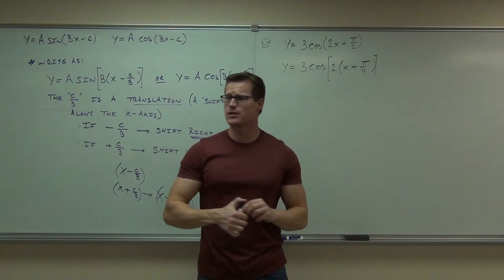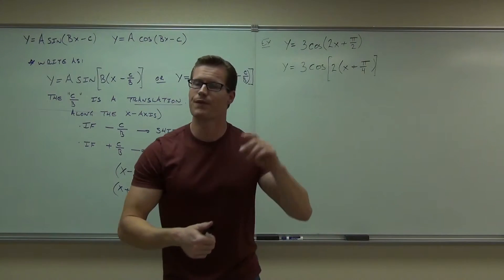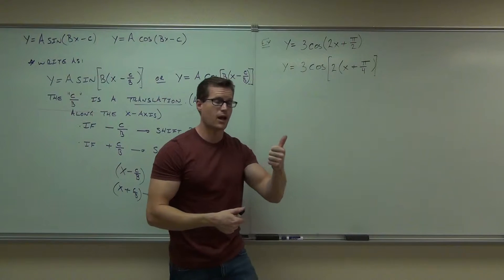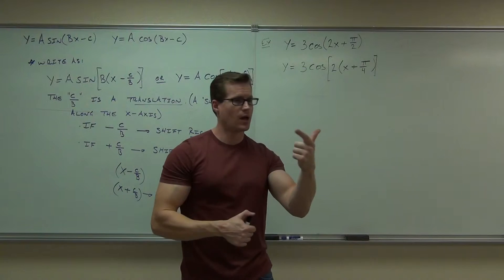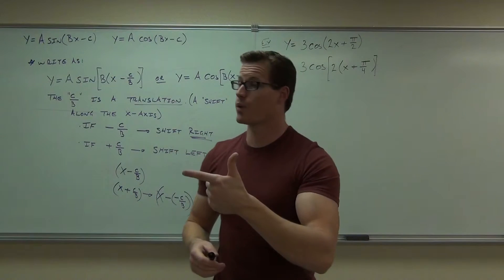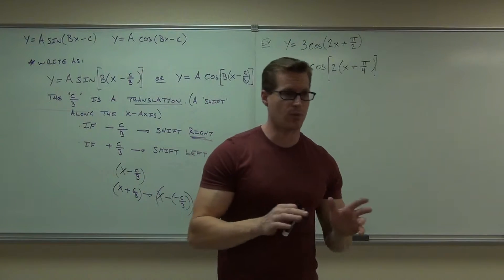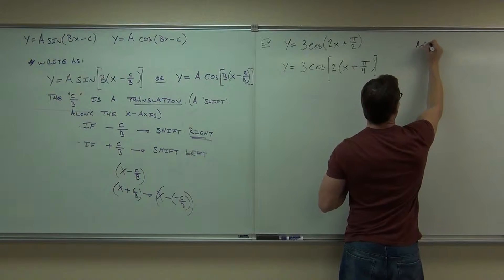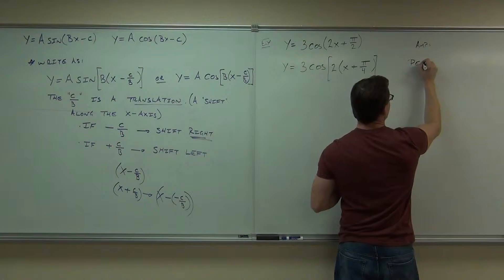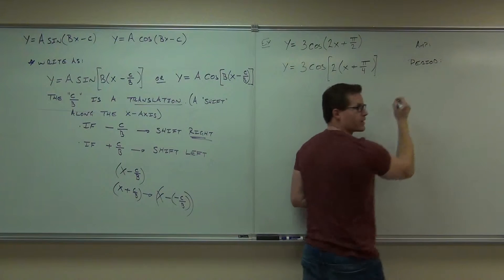Now, let's write out everything that's meaningful about this statement right now. I want the amplitude, so go ahead and do that. I want the period, so go ahead and do that. That's given by your B, remember. And I want you to determine what type of shift this is and by how much. So write out the amplitude, write out the period, and write out the shift.